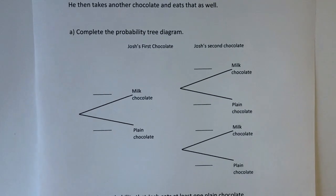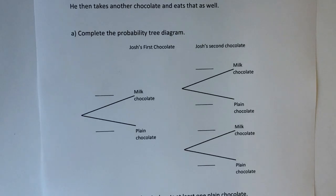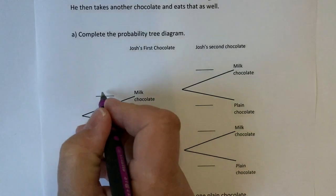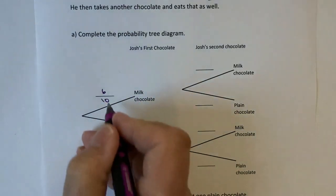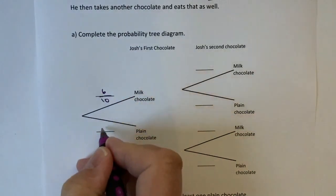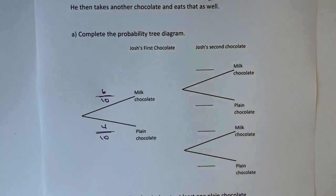So in the first chocolate pick he's got six milk chocolates and four plain chocolates. In other words he's got ten chocolates altogether, of which six out of ten are milk and four out of ten are plain.